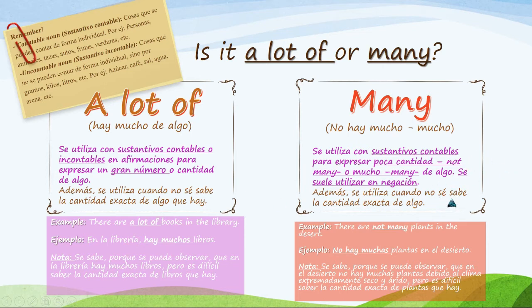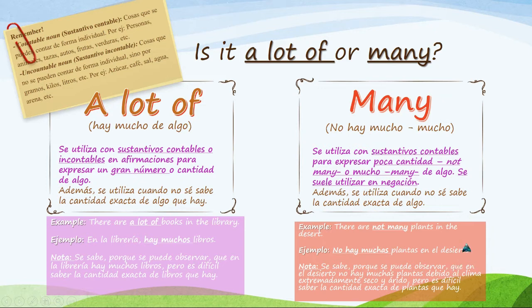Many is commonly used in negation — when you describe something that is lacking. For example: there are not many plants in the desert — no hay muchas plantas en el desierto. In this case, the thing described is the desert, and we use many to describe what it is lacking — in this case, plants.